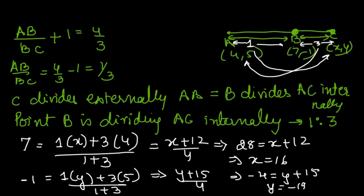So the coordinates of C are (16, −19). This is one way of solving the question — we converted the external division at point C to an internal division at point B on segment AC, and used the original section formula for internal division to find the coordinates of C.